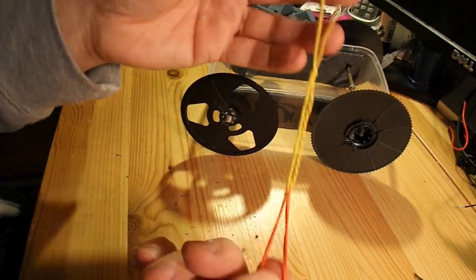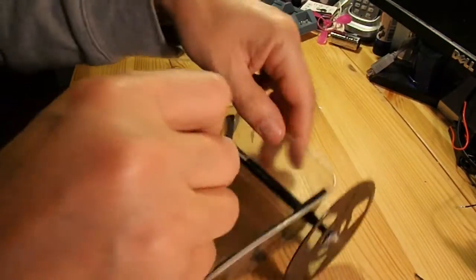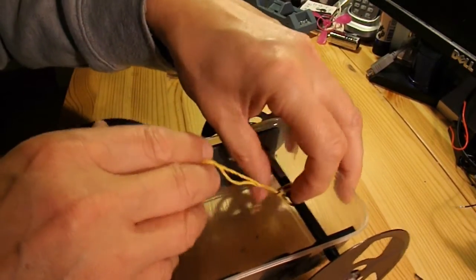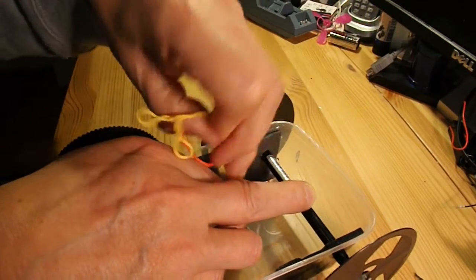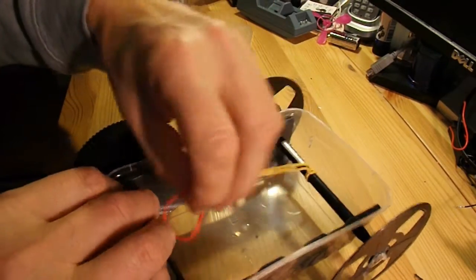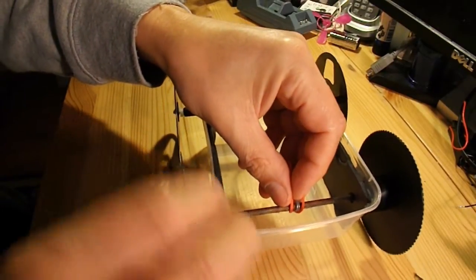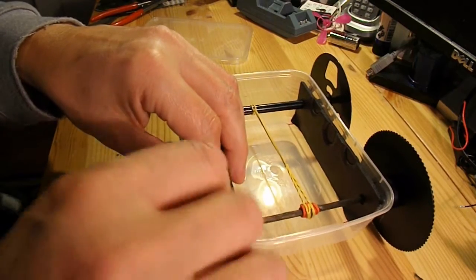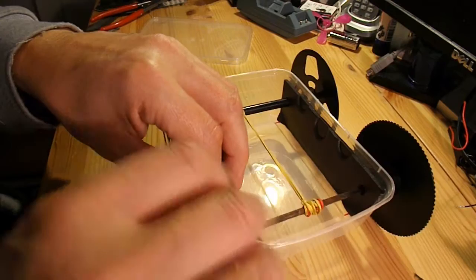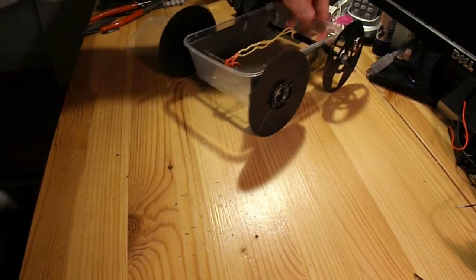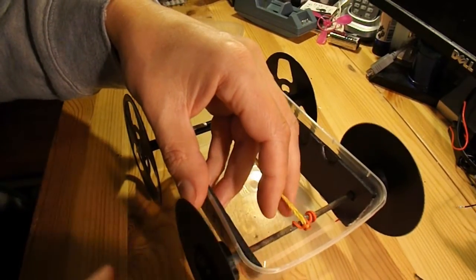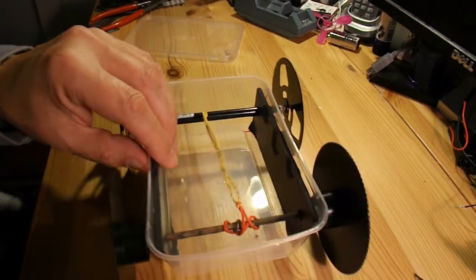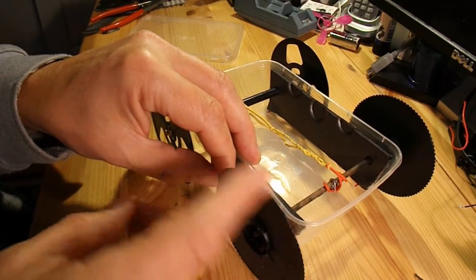Right, I've just looped three rubber bands together because I've only got small rubber bands. Loop it around that front there. Loop it onto the back axle. Well, that's more powerful than I expected. Good bit of wheel spin there.